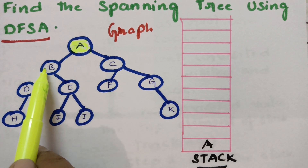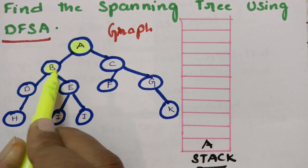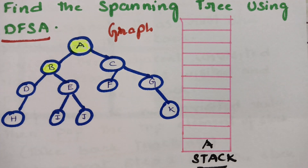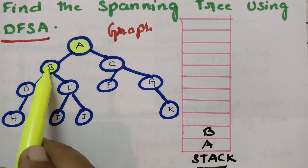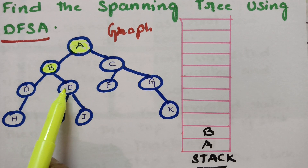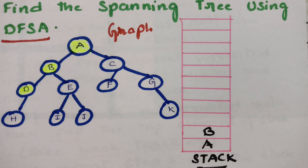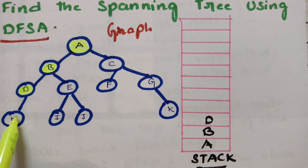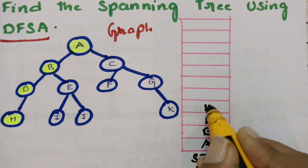Next, we have to search all adjacent unvisited vertices. Here the adjacent vertices of A are B and C — one is left and one is right. I am selecting the left child B, marking it as visited, and pushing it into the stack. From B I have to again visit unvisited vertices. B has two children, so I am choosing the left child D, marking it as visited, and pushing it into the stack. From D there is only a single child H, so I visit H, mark it as visited, and push it into the stack.